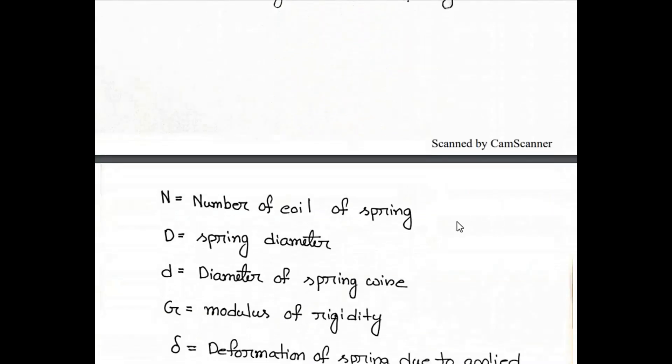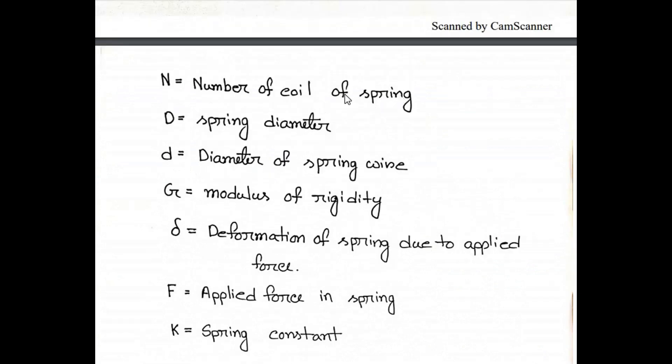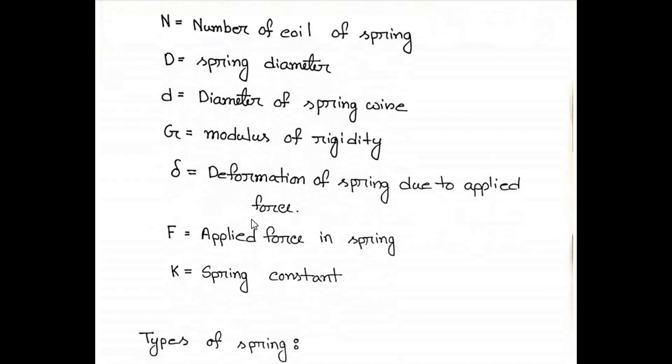Here we have a figure of a helical spring. Let's know some important parameters: N denotes the number of coils, capital D is the spring diameter, small d is the diameter of spring wire, G is the modulus of rigidity, delta is the deformation of spring due to applied force, F is the applied force, and K is the spring constant.